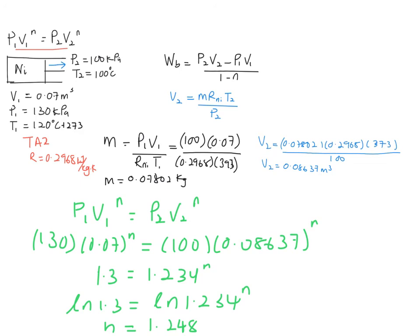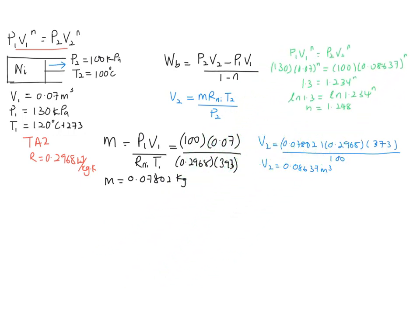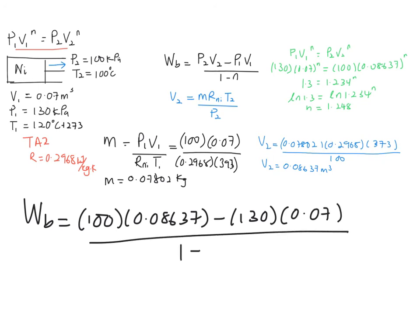So now you have the work boundary for your polytropic process, which is work boundary is equal to 100 times your volume at final minus your initial pressure times the volume of initial, 1 minus 1 minus your index n, which is 1.248. And finally, you will get your work boundary to be 1.86 kilojoule.